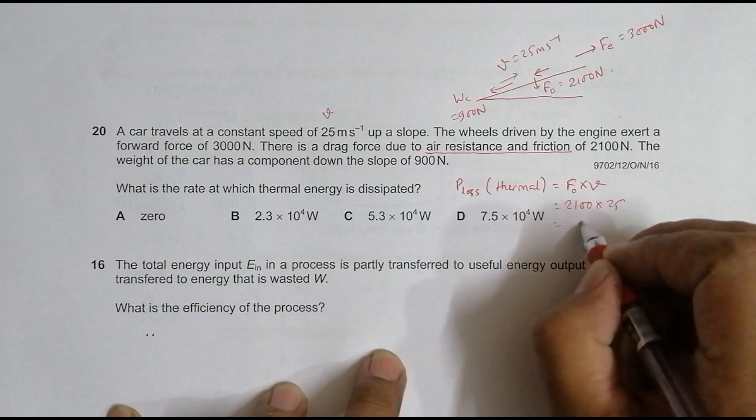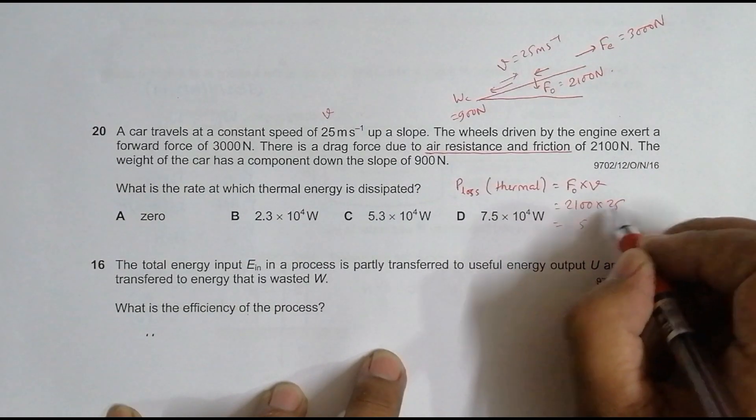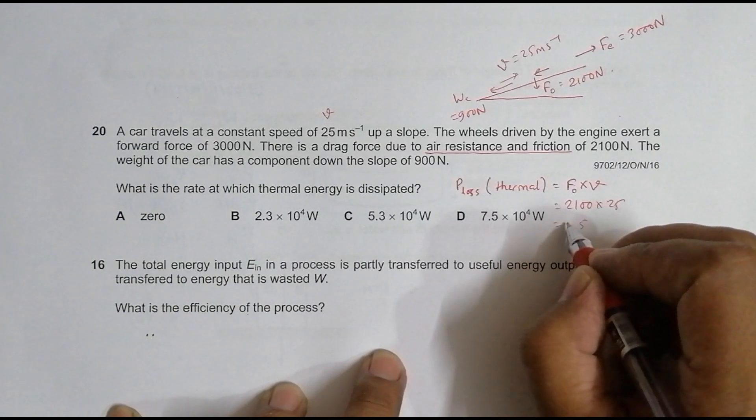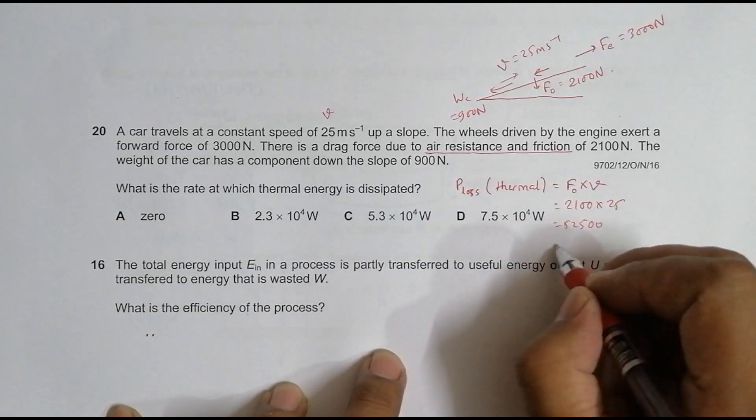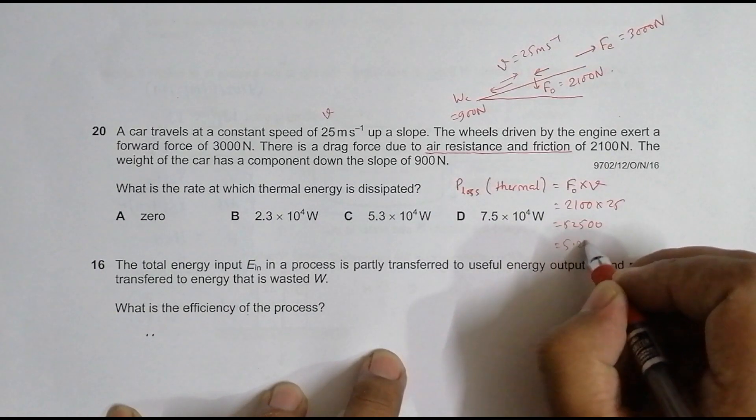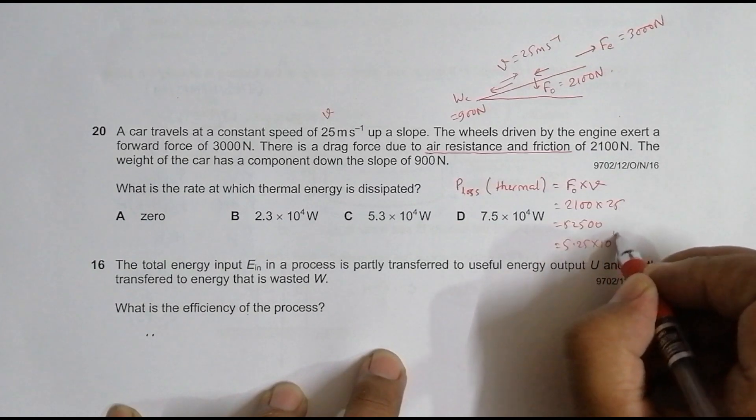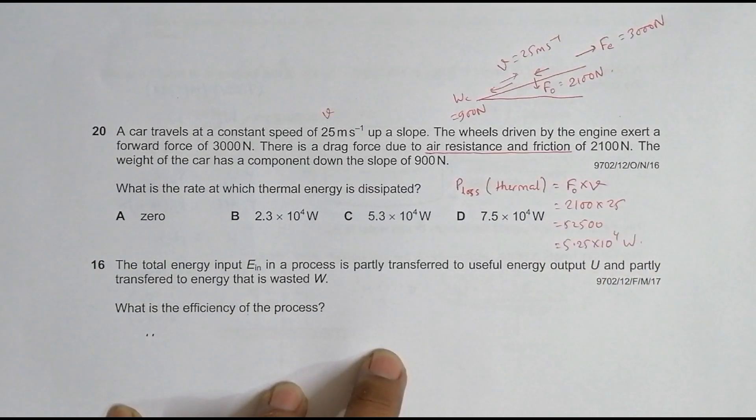That's 21 times 25, which is 525 with two zeros, so 52,500. This will be equal to 5.25 × 10^4 Watts. So the answer closest to this is choice number C.